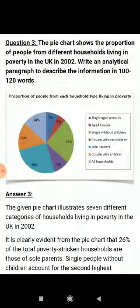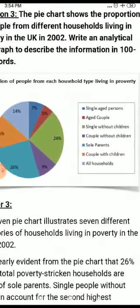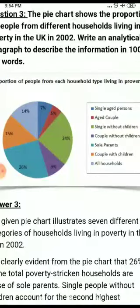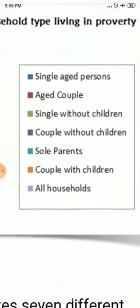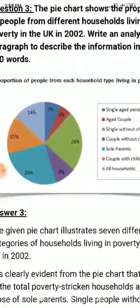Now we will do one example question. The pie chart shows the proportion of people from different households living in poverty in the UK in 2002. Write an analytical paragraph to describe the information in 100 to 120 words. The pie chart illustrates the proportion of people from each household type living in poverty. You can see a pie chart is given — the single aged person is shown in blue, the aged couple in red, and so on.